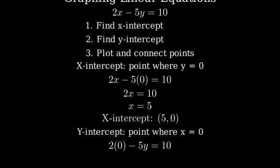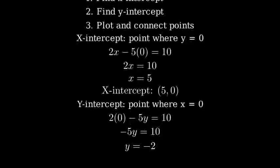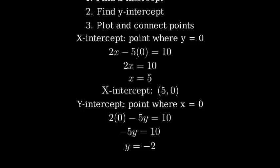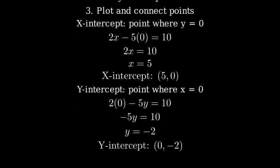2 times 0 minus 5y equals 10. Simplifying, we get negative 5y equals 10, so y equals negative 2. Therefore, the y-intercept is the point (0, -2).